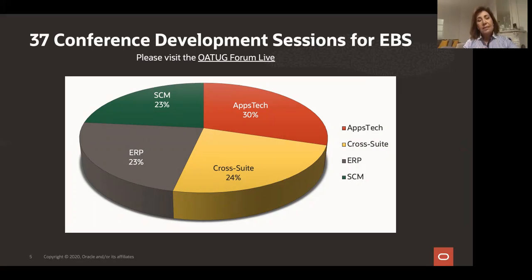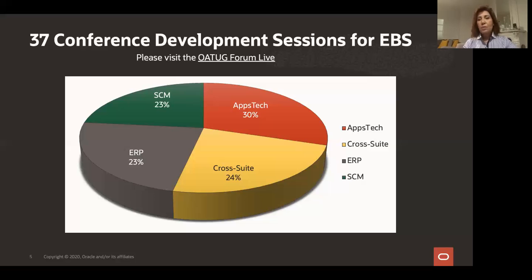We also have 30% of sessions that are very specific to application technology. Application technology is basically the foundation, the platform that underpins EBS as a product. We have 23% of ERP sessions, covering EBS suite financials, procurement, and projects. Equally, we have 23% of our sessions dedicated to supply chain. Supply chain usually covers order management, logistics, inventory, shipping, manufacturing, enterprise asset management, field service, and so on.